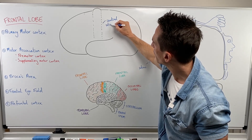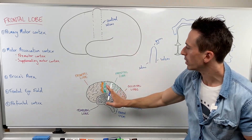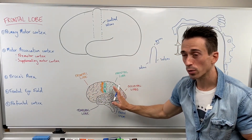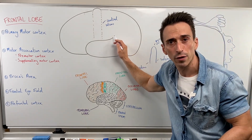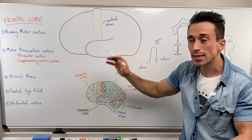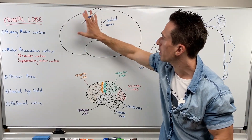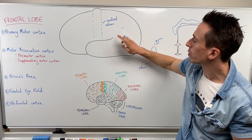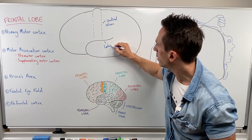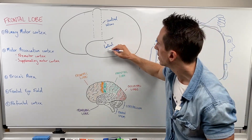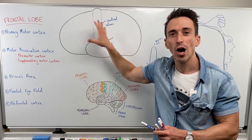This central sulcus is actually the delineating marker anatomically that separates the frontal lobe from the parietal lobe. Inferiorly, we've got this fissure called the Sylvian fissure or the lateral sulcus, and that separates the frontal lobe from the temporal lobe. So the central sulcus separates the frontal from the parietal, and the lateral sulcus separates the frontal from the temporal lobe. Now that we've identified the anatomical barriers, we can talk about the functional divisions of the frontal lobe.